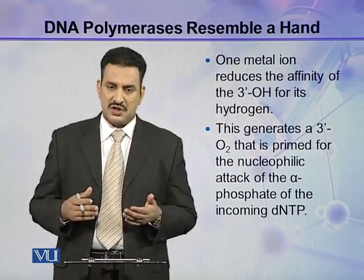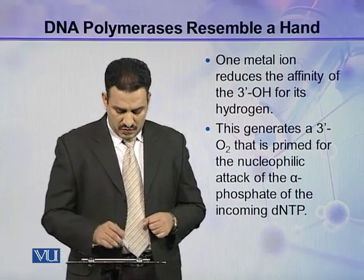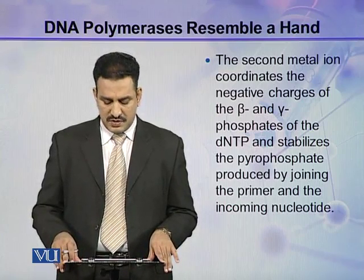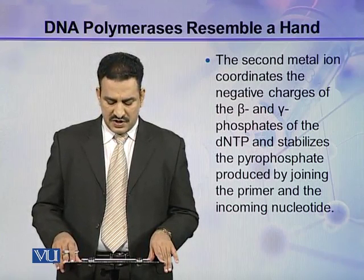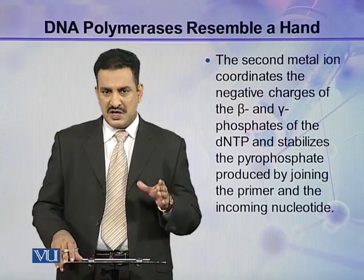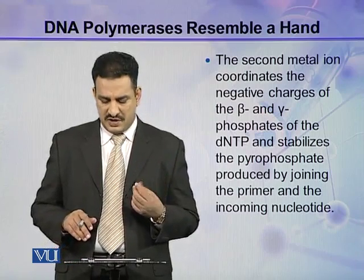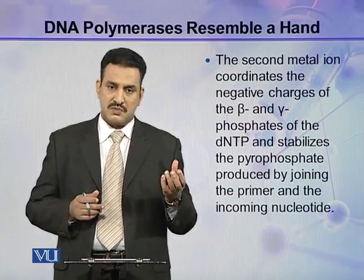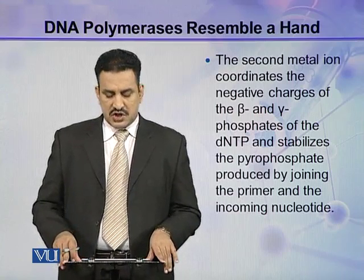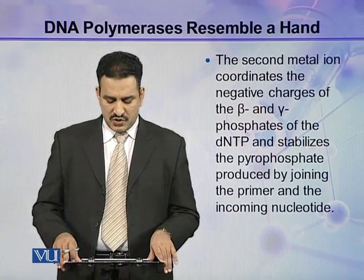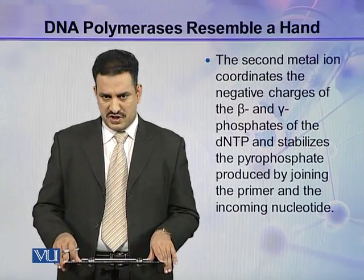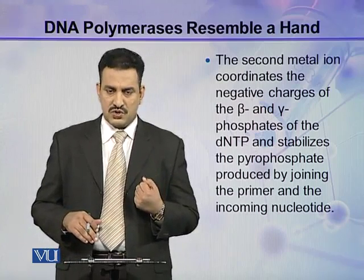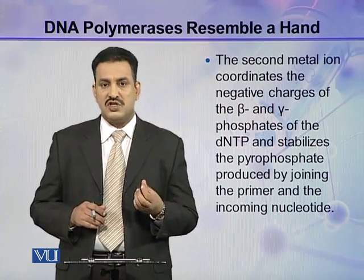To prime this 3' end, the first metal ion works. The second metal ion coordinates with the negative charges of the beta and gamma phosphates of the dNTPs. When these two phosphates — the pyrophosphate — are released, this metal ion coordinates with their negative charges and stabilizes the pyrophosphate produced by joining the primer and the incoming nucleotide.